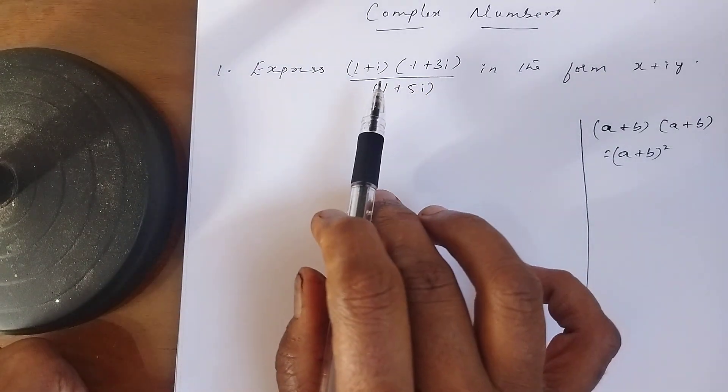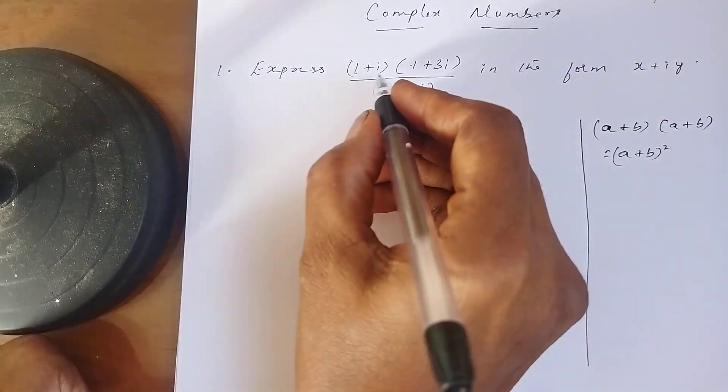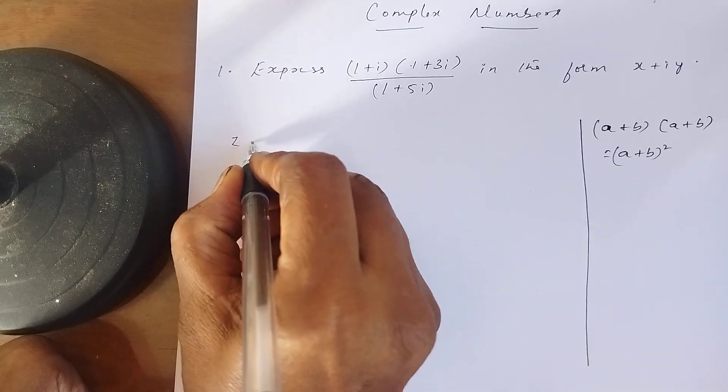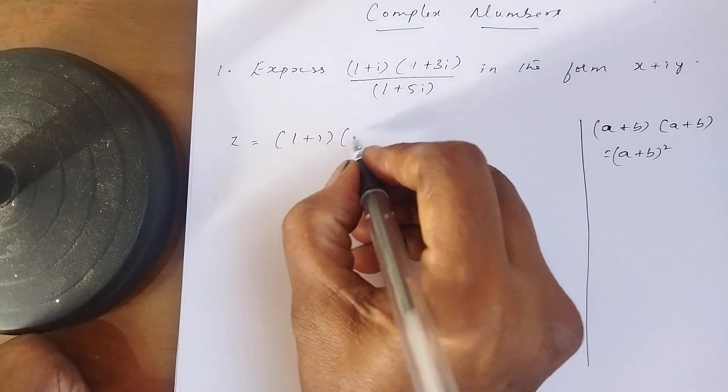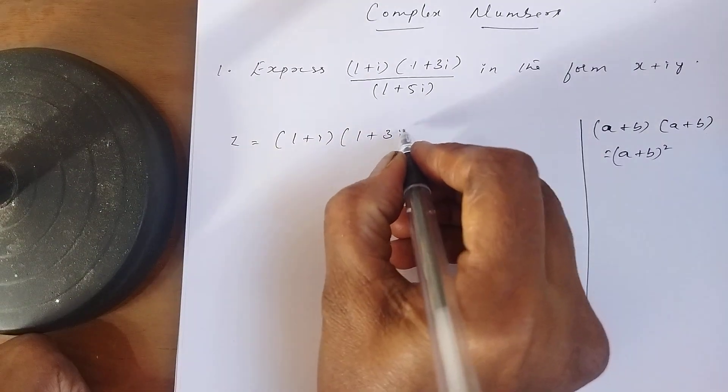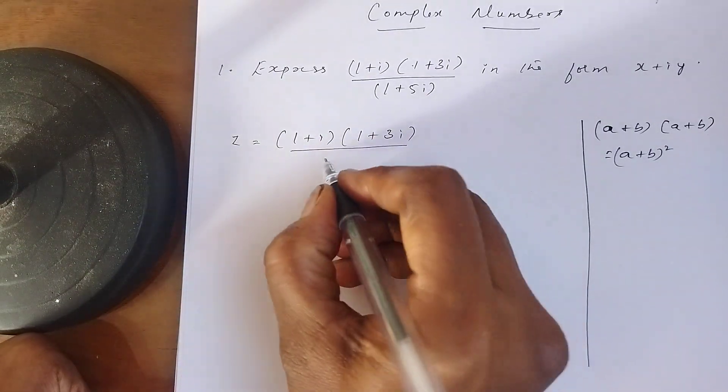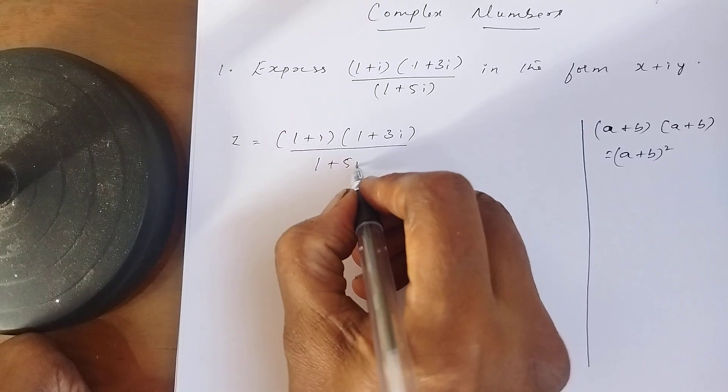How to solve this problem? You just write this question. Z equals (1+i)(1+3i) divided by (1+5i).